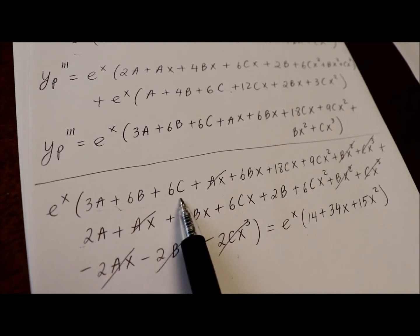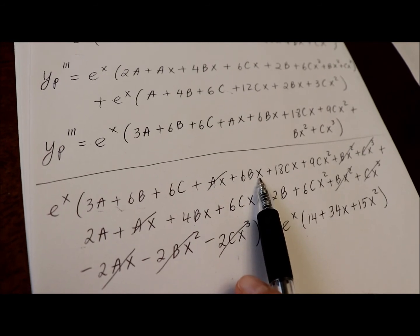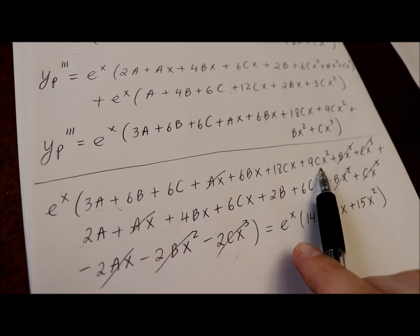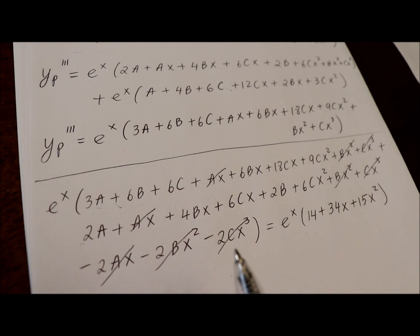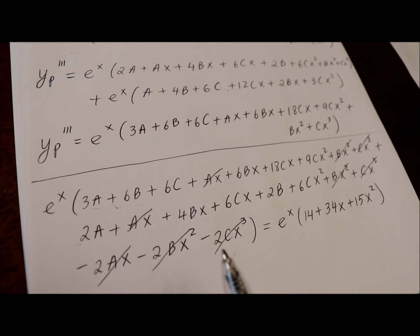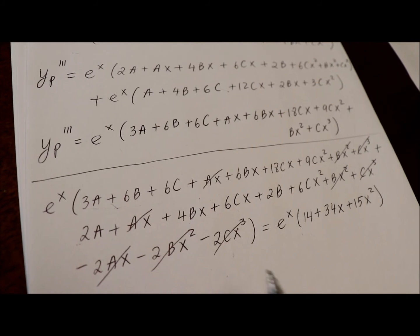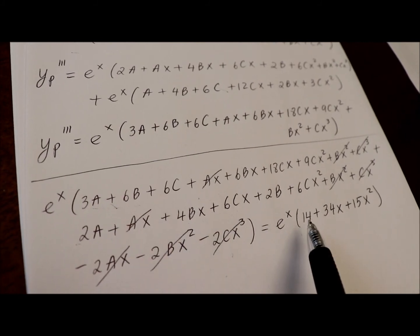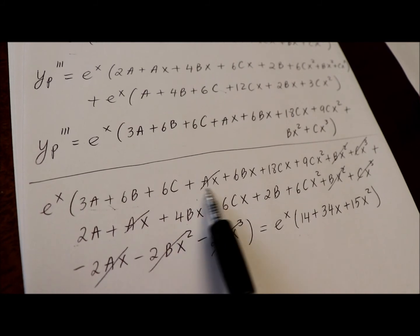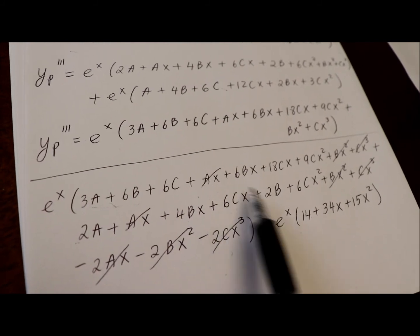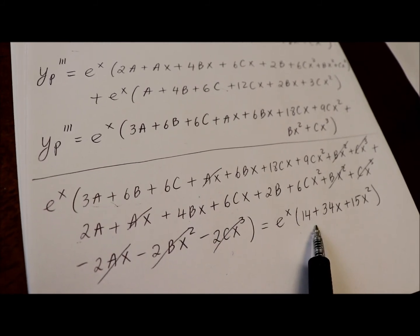We have constants, then we have terms with x, and terms with x squared. And since we are looking for solution of this equation, this equation has to be an identity. So, sides should be identical for any value of x,